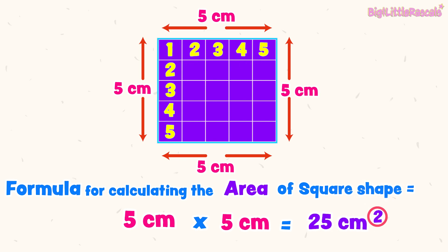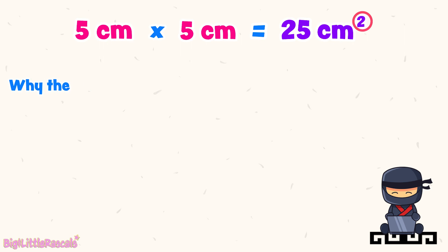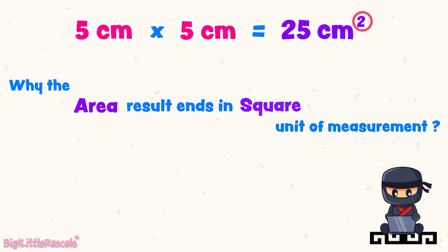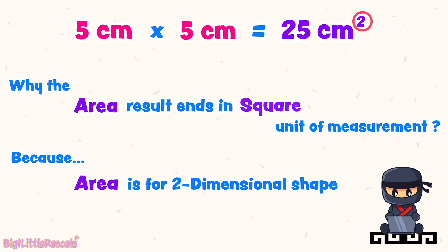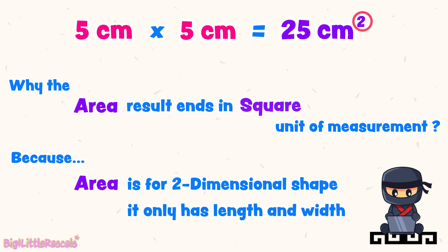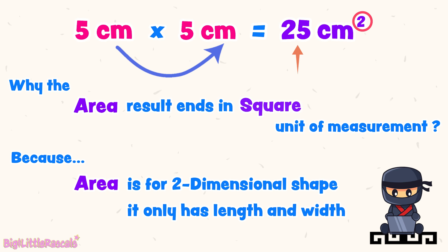For calculating area, remember the result is in square units of measurement. In this case, the unit of measurement is centimeters, so the result is square centimeters. Do you know why area results end with a square unit? Because area is a two-dimensional shape — it has length and width. 5 multiplied by 5 equals 25, and centimeter multiplied by centimeter equals square centimeter. So a two-dimensional shape's area is represented in square units.